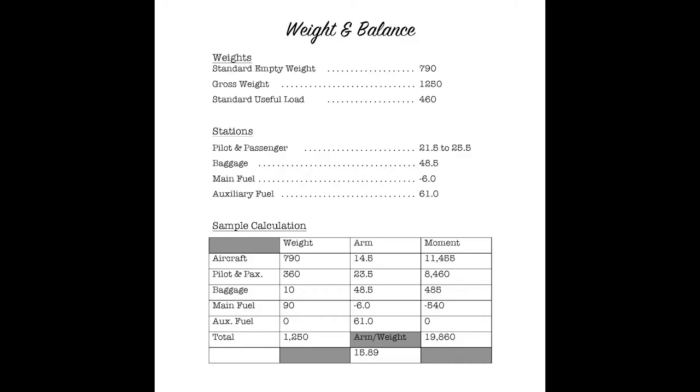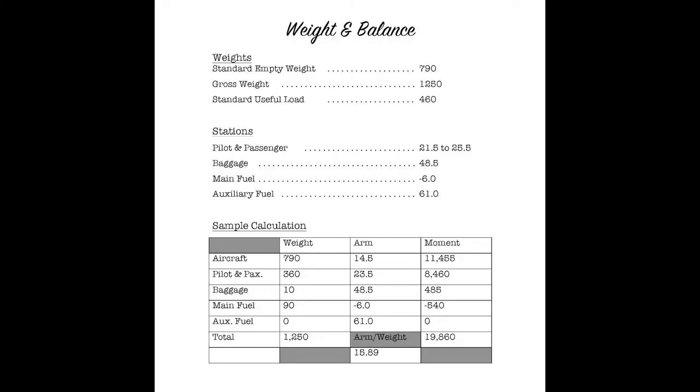When we calculate our weight and center of gravity, we have a little form that we use. In the Chief handbook here, it shows in our weight and balance section what the standard empty weight of the airplane is. In the case of the particular Chief that we're flying, we would have to use the empty weight that's listed on the weight and balance sheet in the airplane. The gross weight of the airplane, which is the maximum allowable weight, is the same for all Chiefs. That would be the same on the paperwork in the plane as it is here.